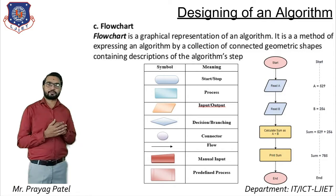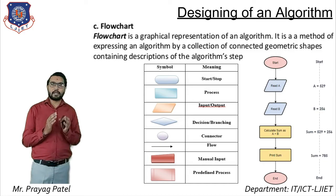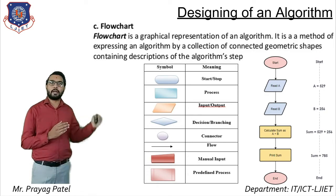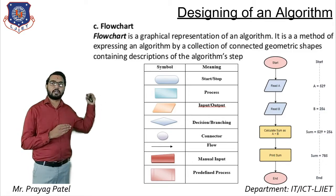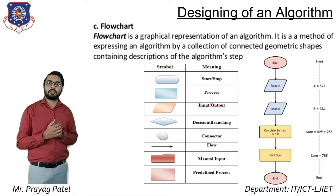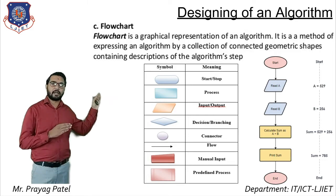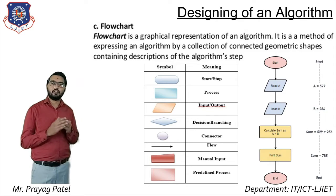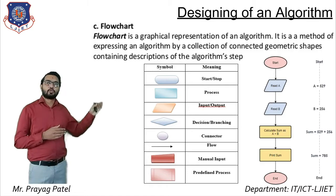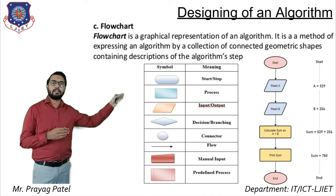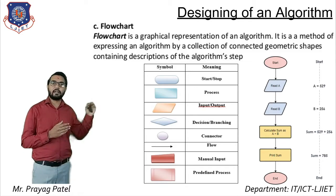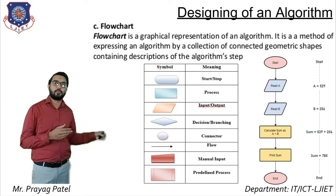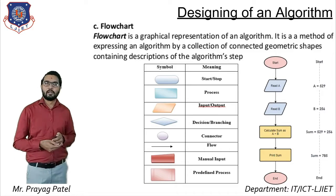The third way is a flowchart — a graphical representation of an algorithm using connected geometric shapes. Symbols used include: oval for start/stop, rectangle for process, parallelogram for input/output, diamond for decision, circle for connector, arrows for flow, and symbols for manual input and predefined process. For addition of two numbers: start → read A → read B → process C = A + B → print result → end.